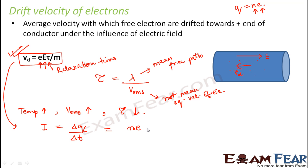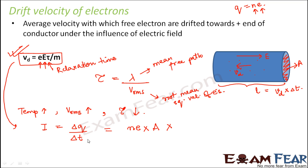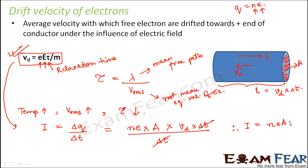The volume equals cross-sectional area A multiplied by the length of the conductor. This length is basically the total distance travelled, and we know distance equals speed times time. The speed here is the drift velocity V_d and the time is Δt, so the length is V_d × Δt. Substituting back into ΔQ/Δt, the Δt cancels, and therefore current I = nEAV_d. This is the relationship between current and drift velocity.